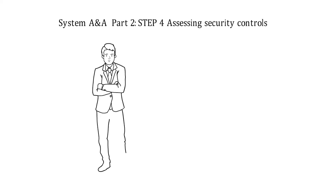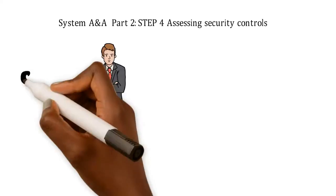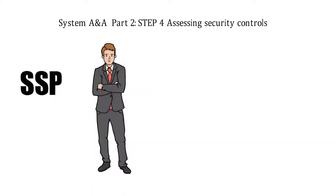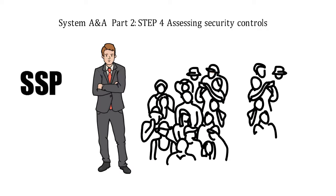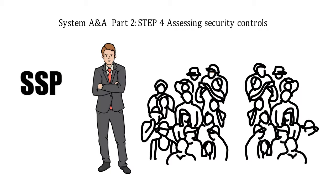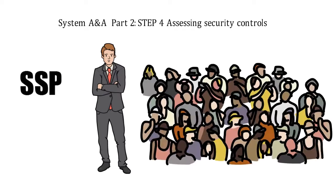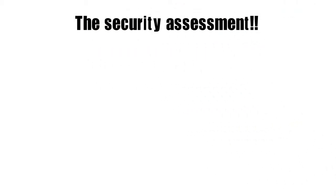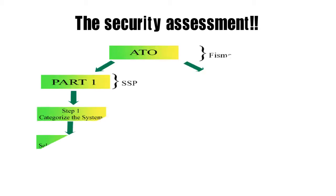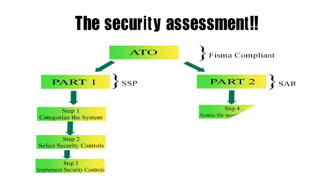Hey there. So you are now an SSP technical writing machine. Put on your party hat. But wait, we're not done yet. I know, I'm such a party pooper, aren't I? So now that you have a DOP SSP, it's time to move on to part two, the security assessment. That's step four, five, and six of the RMF.